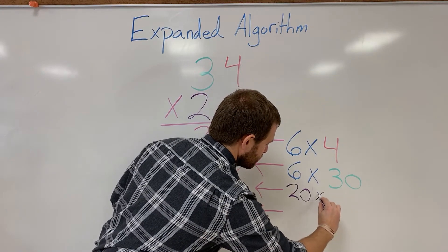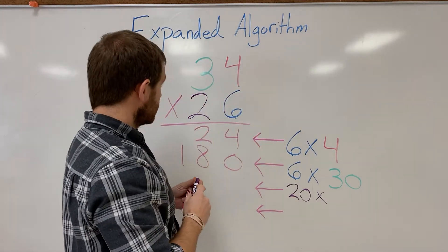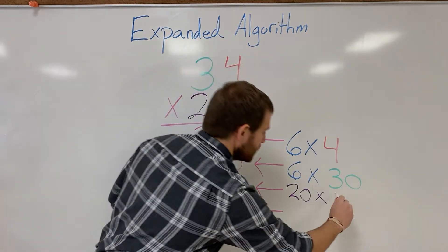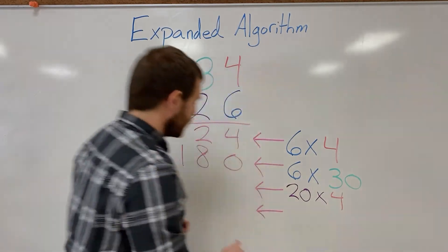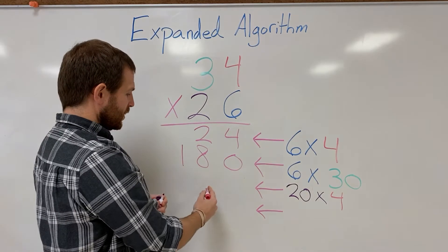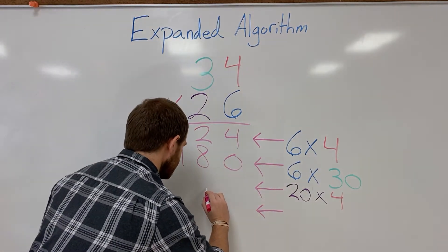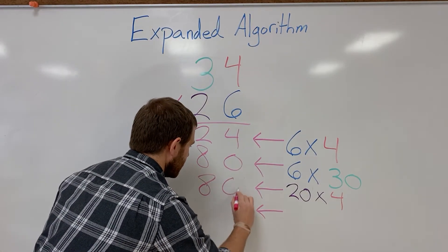20 times 4. 4 is red. And 20 times 4 is gonna give me 80.